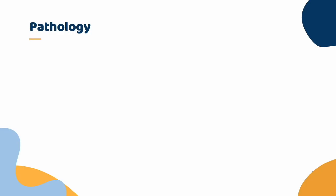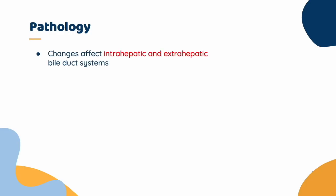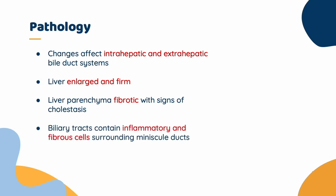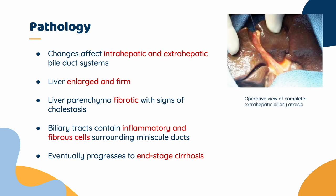The changes of biliary atresia affect intrahepatic and extra-hepatic bile duct systems. A liver biopsy is always done when a child is strongly suspected of having biliary atresia. On gross examination, the liver is enlarged and firm, and the liver parenchyma is fibrotic with signs of cholestasis. On histologic exam, biliary tracts contain inflammatory cells surrounded by minuscule ducts. The disease eventually progresses to end-stage cirrhosis. The following image demonstrates an operative view of complete extra-hepatic biliary atresia.